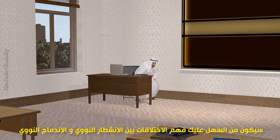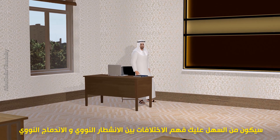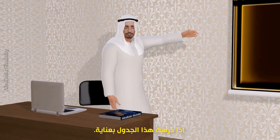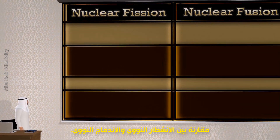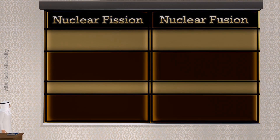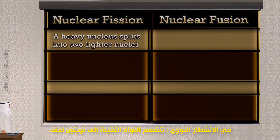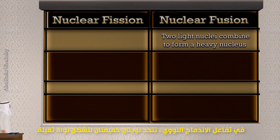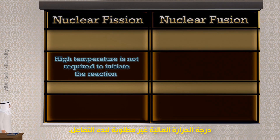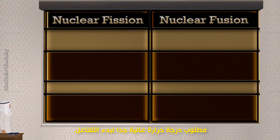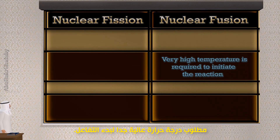But how are they different? It will be easier to understand the differences between nuclear fission and nuclear fusion if you study this table carefully. A comparison between nuclear fission and nuclear fusion: In nuclear fission, a heavy nucleus splits into two lighter nuclei. In nuclear fusion, two light nuclei combine to form a heavy nucleus. High temperature is not required to initiate the fission reaction, but very high temperature is required to initiate the fusion reaction.